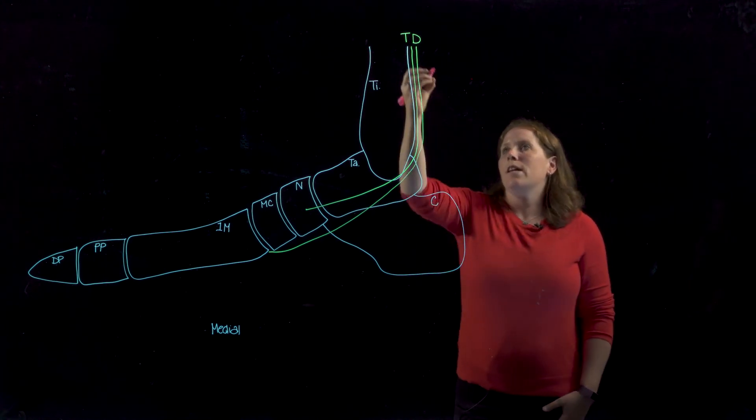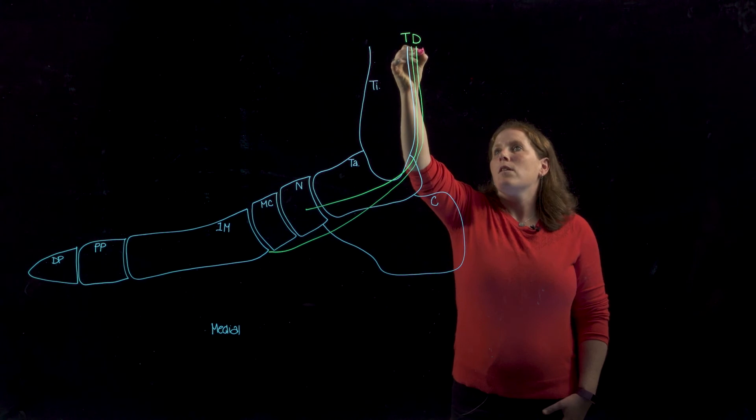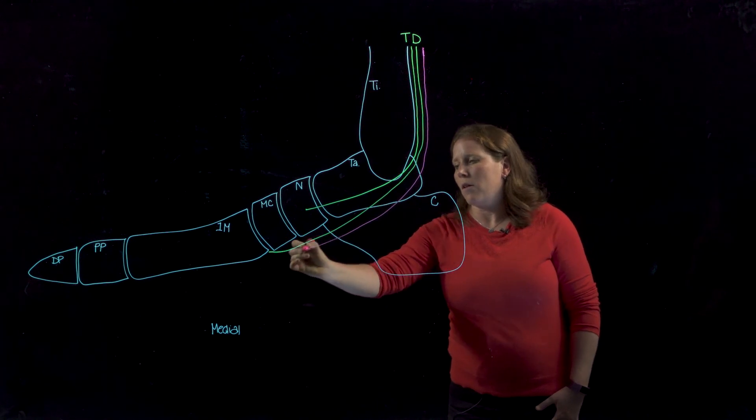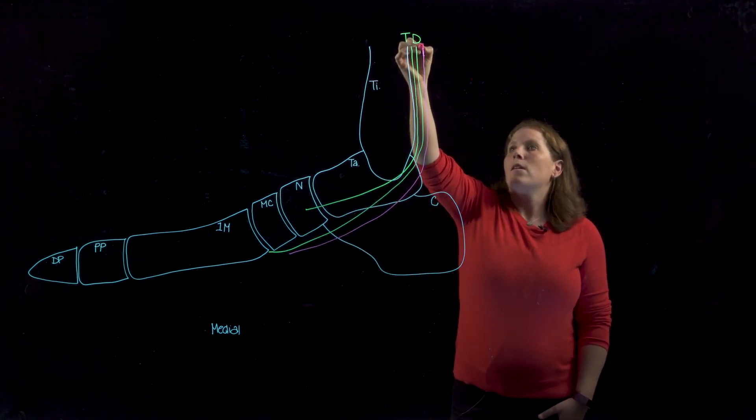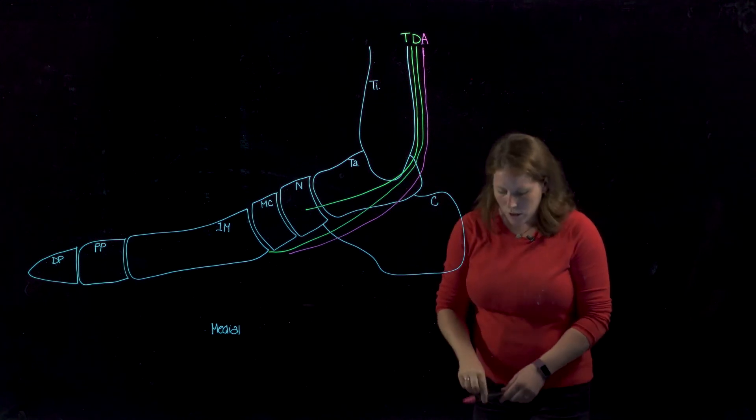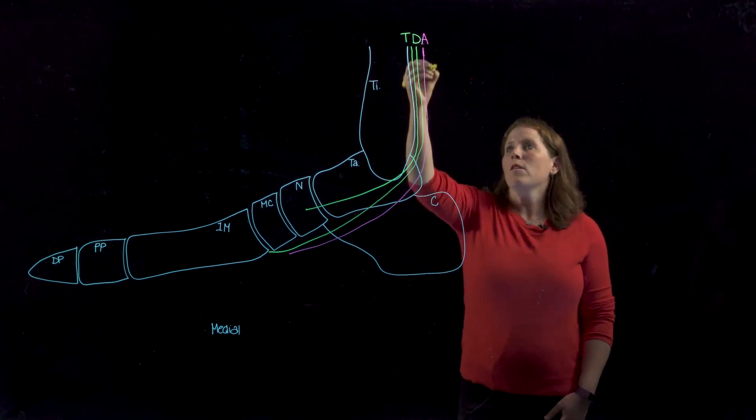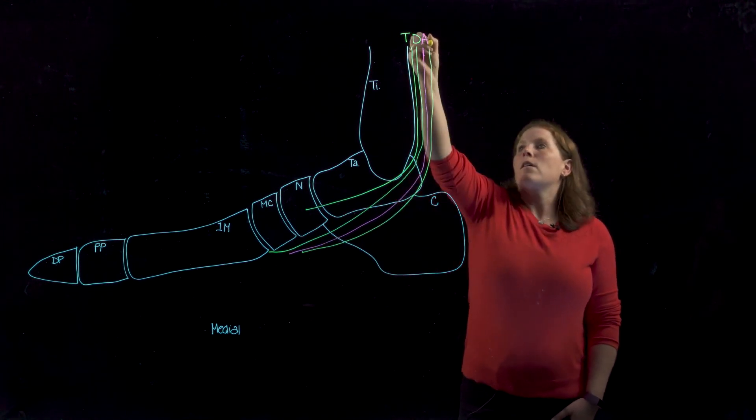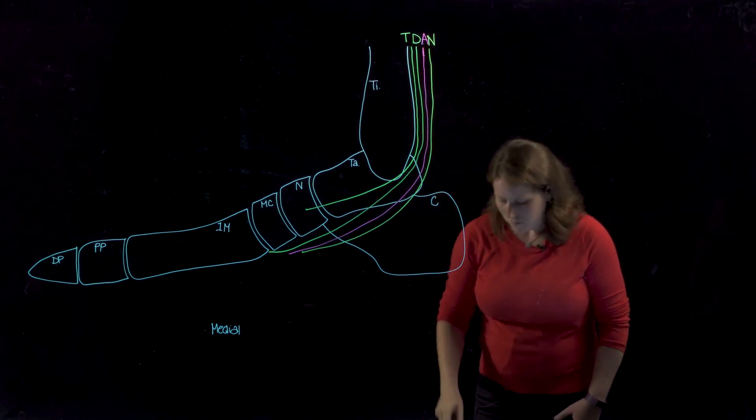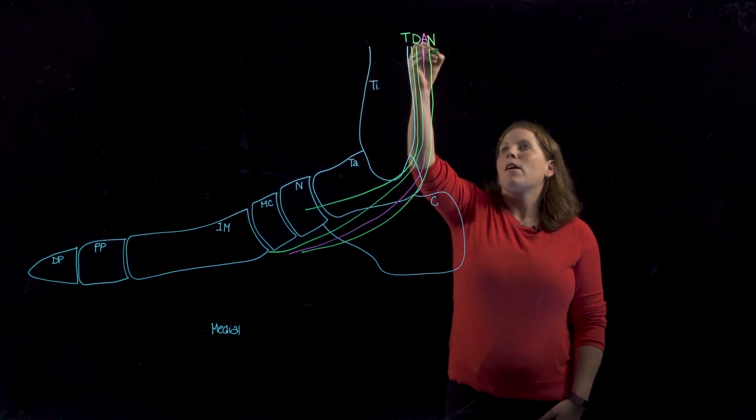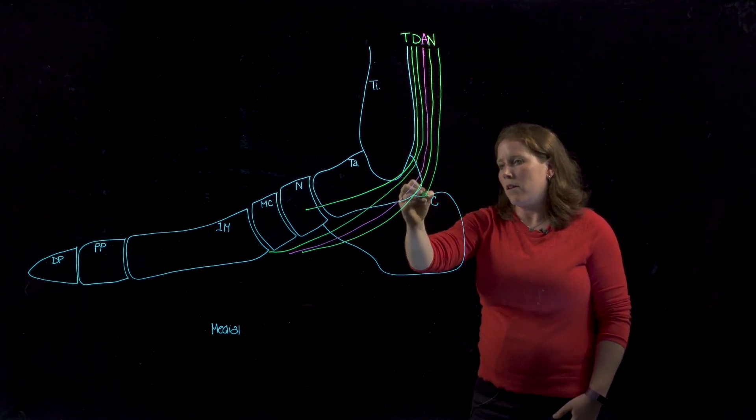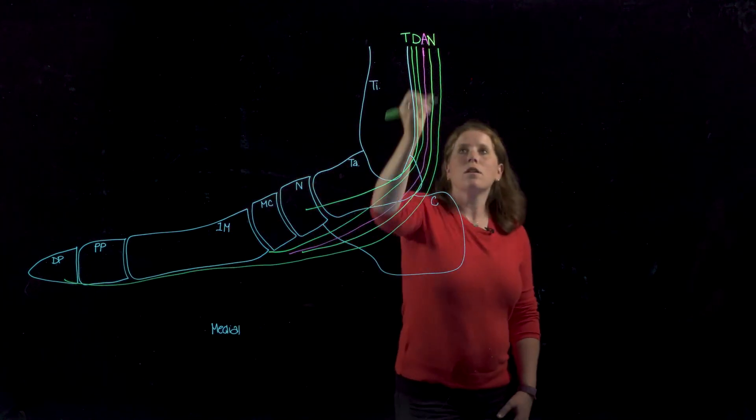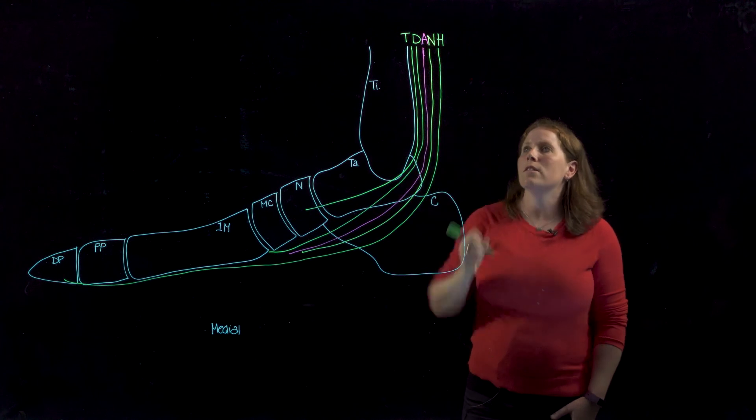Next in the sequence is actually not a tendon but an artery. That's the posterior tibial artery, followed by the tibial nerve, and lastly our final tendon, which will travel to the first digit, is flexor hallucis longus or H.